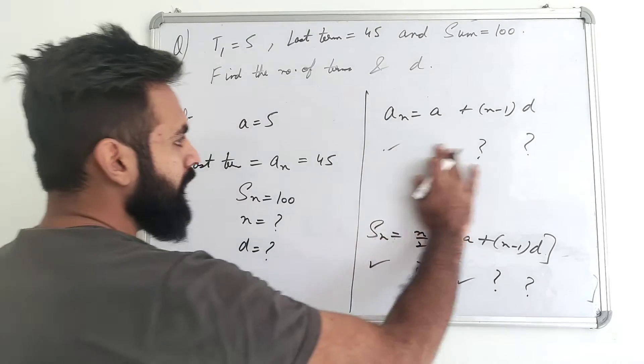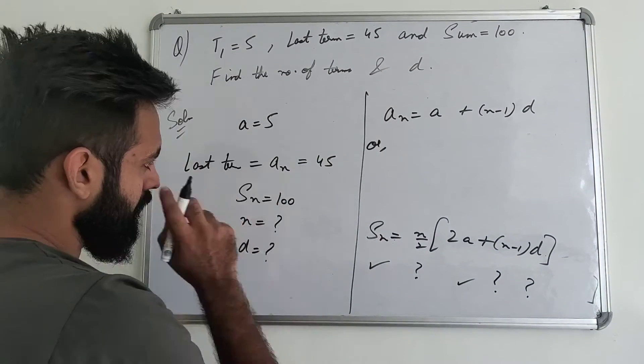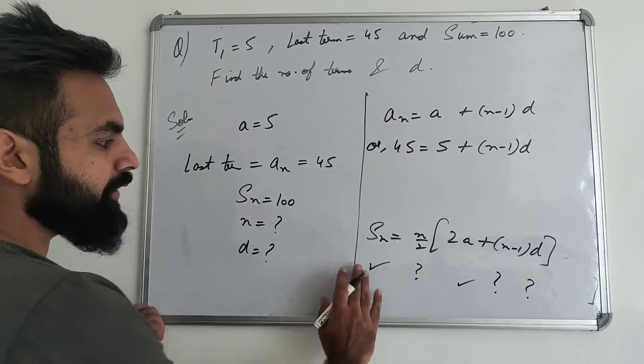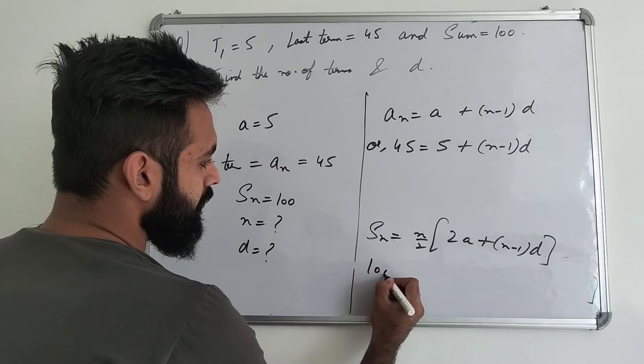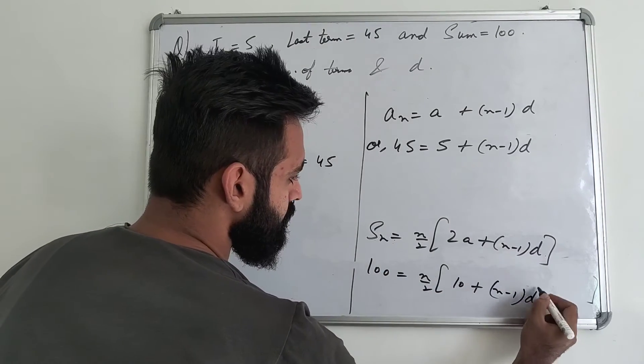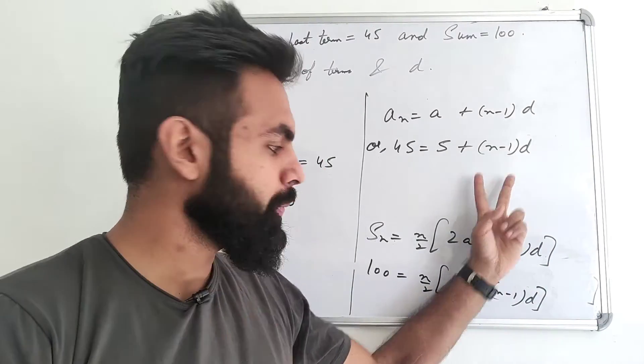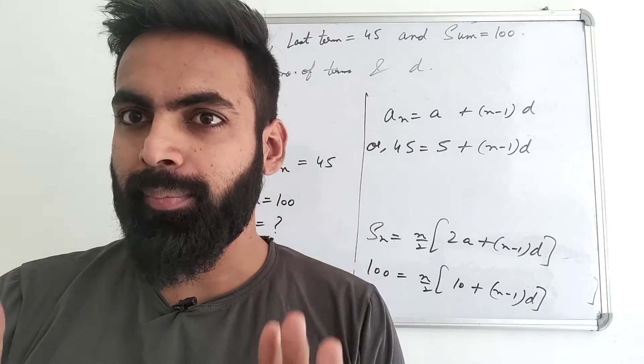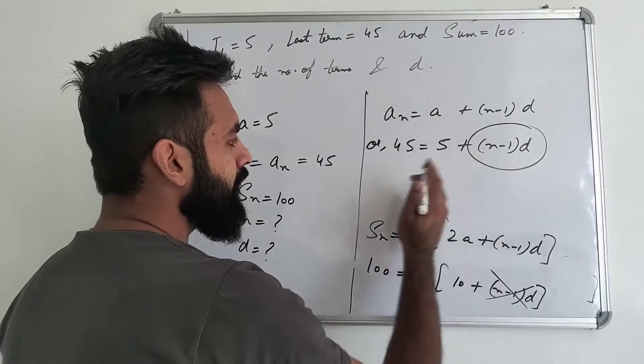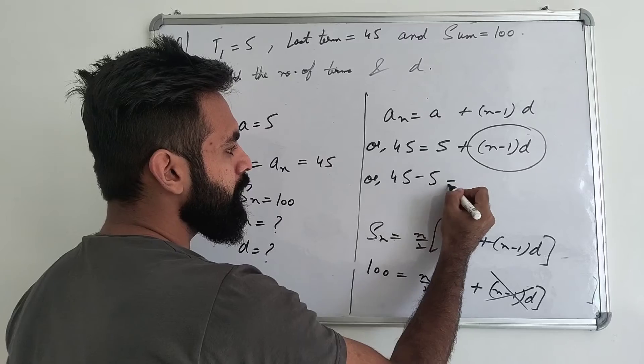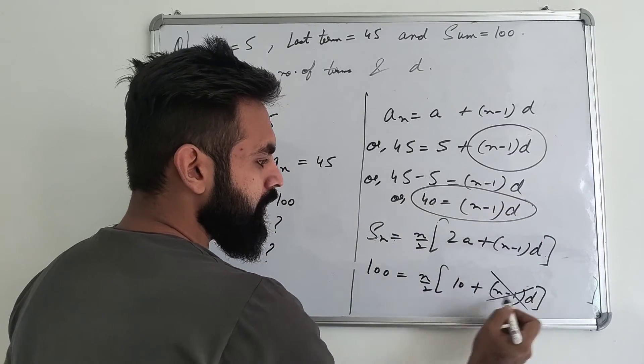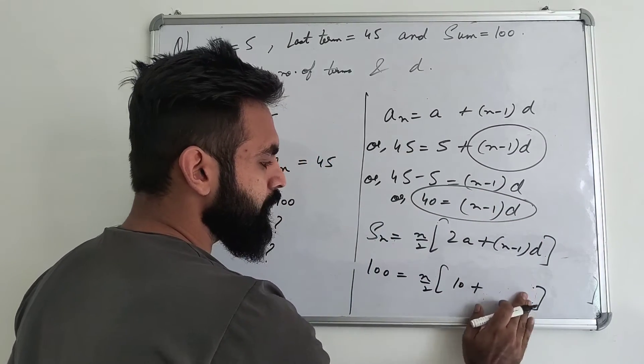So if I set the equation here, what will happen here? AN you have given 45. So here 45. A value is 5, plus N minus 1 into D. So we will do this. If I set the equation here, how many times? 45 minus 5, this is equal to N minus 1 into D. So this is equal to N minus 1 into D. So you will get 40. You don't know how much N and D is, but N minus 1 into D. So you will put 40. So here I will tell you that you can substitute as 40.